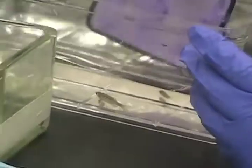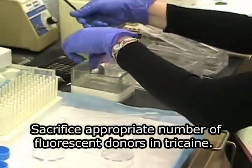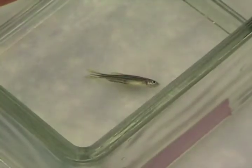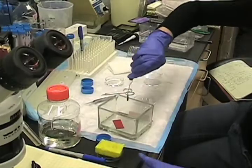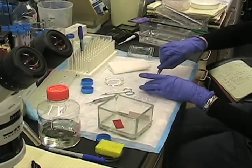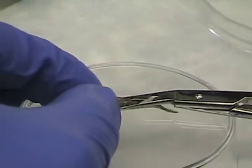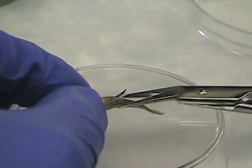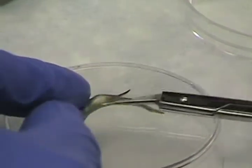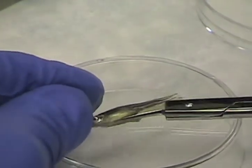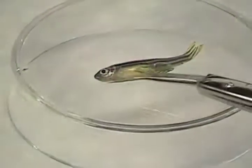On day of transplant, sacrifice the appropriate number of fluorescent donors in tricaine. Just wait until you can't see the gills moving anymore. I just put some on a dish like this, just a platform, and then make a small cut right below its belly, and then I can insert the scissors and cut down the belly like this. So now it's cut all the way down here.